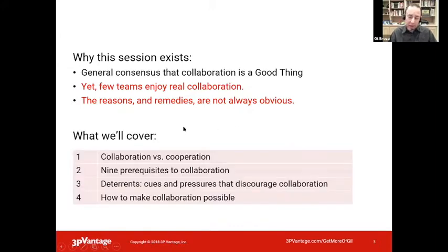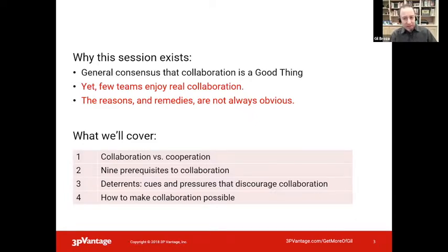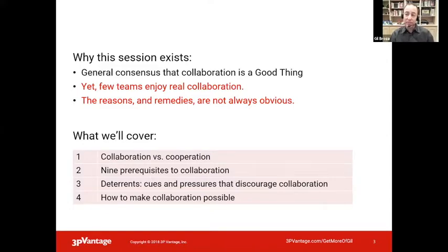Here's what we're going to cover. We're going to look at collaboration versus cooperation — this will set the stage. Then we'll look at prerequisites: necessary but not sufficient conditions for people to collaborate. Then we'll look at deterrents — what might happen, even after all conditions are met, that prevents or discourages people from collaborating. Then we'll tie it all together into a process so you can take specific steps, back in the office or virtually, to help your team with greater collaboration.